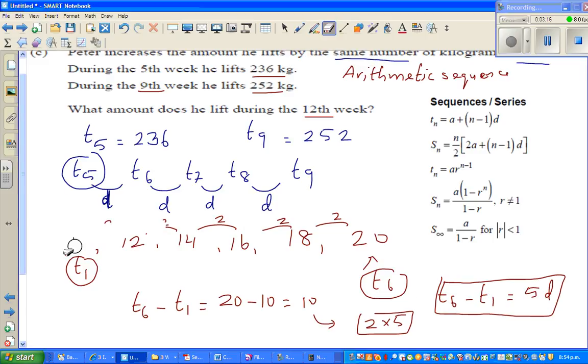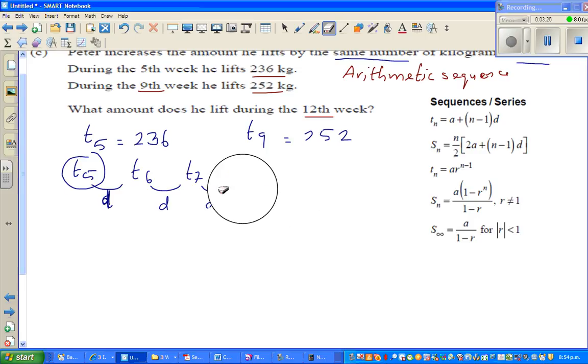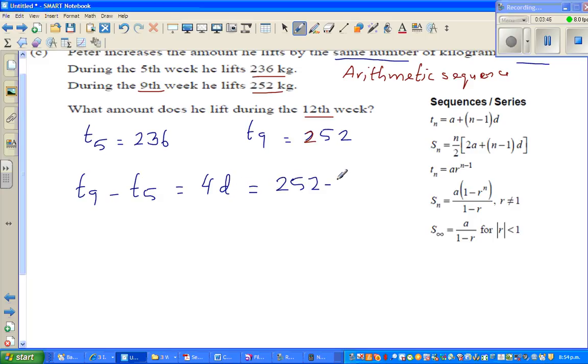So what I'm saying is that if t5 is 236 and t9 is 252, I can say t9 minus t5 is 4D or 4 times D, which is 252 minus 236. So 252 minus 236 is 16. I can say 4D is equal to 16, which implies D is equal to 4. So the common difference is 4.